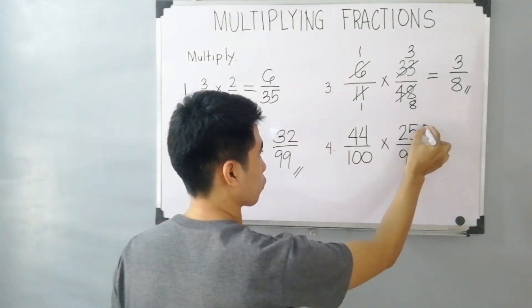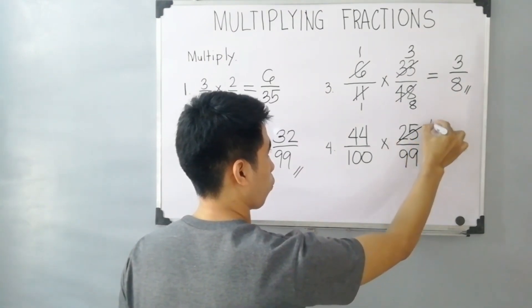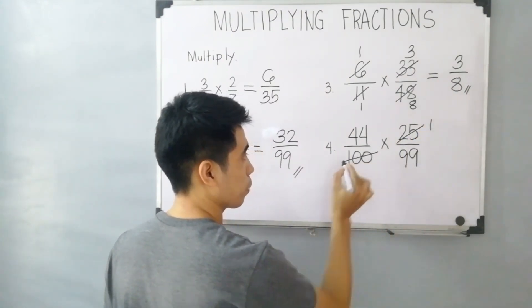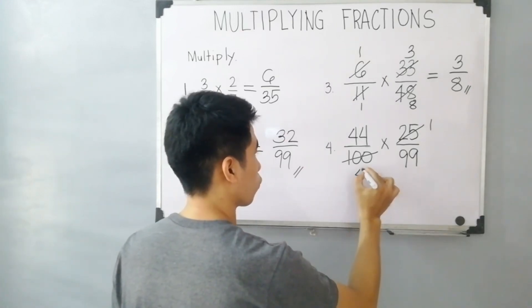Let's divide 25 by 25, that is equal to 1. 100 divided by 25 is equal to 4.